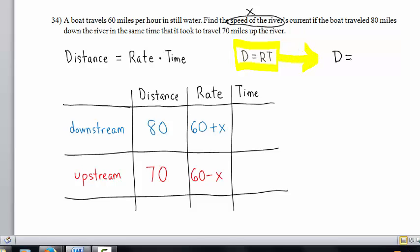We are not given specific numbers about the time downstream or the time upstream. But this equation here tells us something. If distance equals rate times time, then I can solve for time by dividing this equation on both sides by r. And this tells me that time equals distance divided by rate. So the time downstream is the distance divided by the rate. Distance, 80, divided by rate, 60 plus x. Likewise, the time upstream, distance divided by rate, 70 divided by 60 minus x.